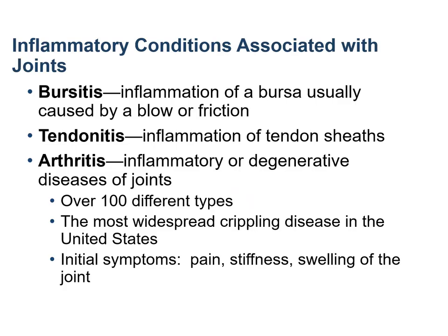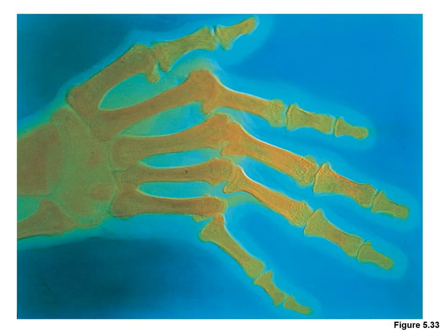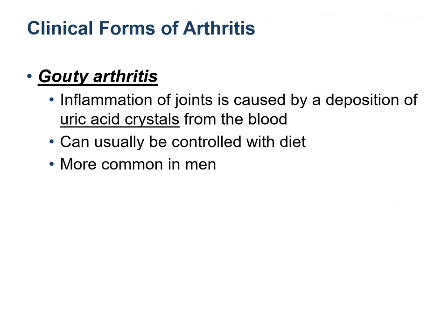Bones are subject to various inflammatory conditions. Bursitis is the inflammation of the bursa. Tendonitis is the inflammation of the tendon sheath. Arthritis is the inflammation of the joints and is one of the most crippling diseases in the US. Osteoarthritis is the most common age-related arthritis. Rheumatoid arthritis is an autoimmune disorder, meaning the body's own immune cells attack self-tissues.